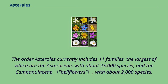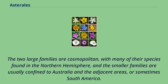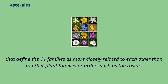The order Asterales currently includes 11 families, the largest of which are the Asteraceae with about 25,000 species, and the Campanulaceae with about 2,000 species. The remaining families count together for less than 1,500 species. The two large families are cosmopolitan, with many of their species found in the northern hemisphere, and the smaller families are usually confined to Australia and adjacent areas, or sometimes South America. Only the Asteraceae have composite flower heads; the other families do not, but share other characteristics such as storage of inulin, that define the 11 families as more closely related to each other than to other plant families or orders such as the Rosales.